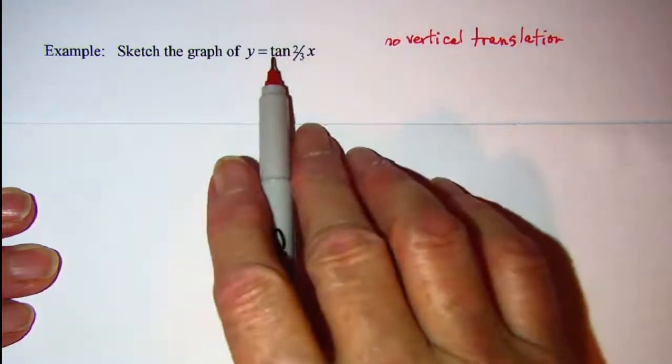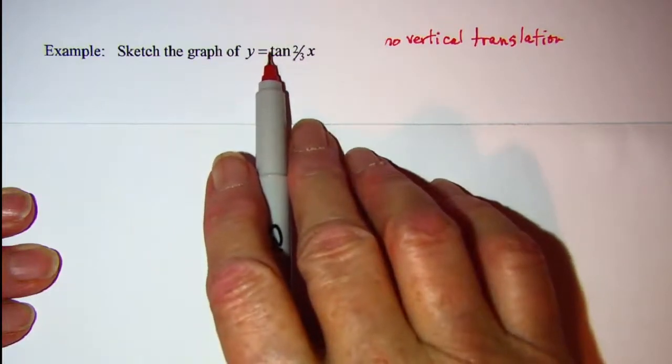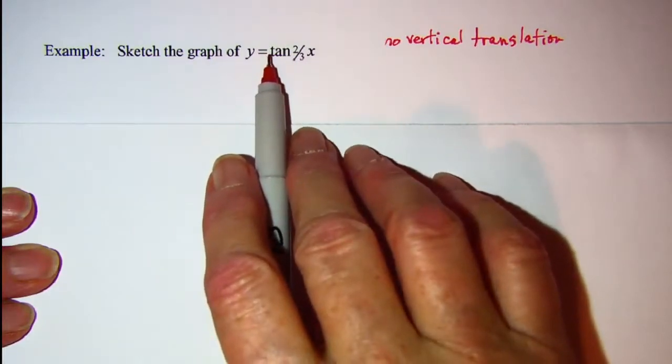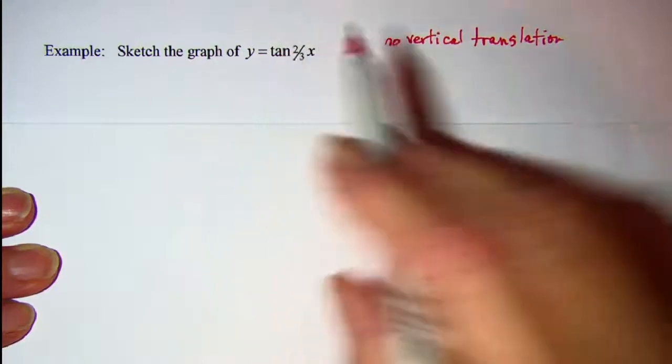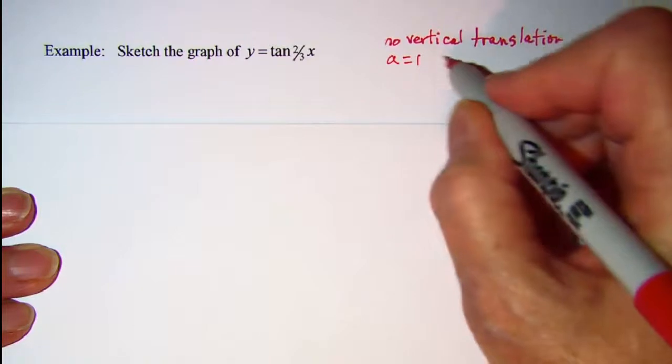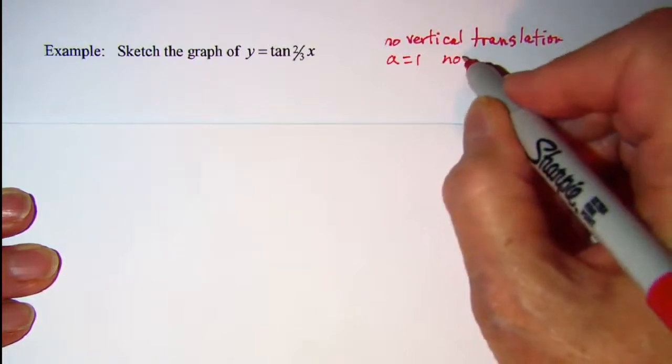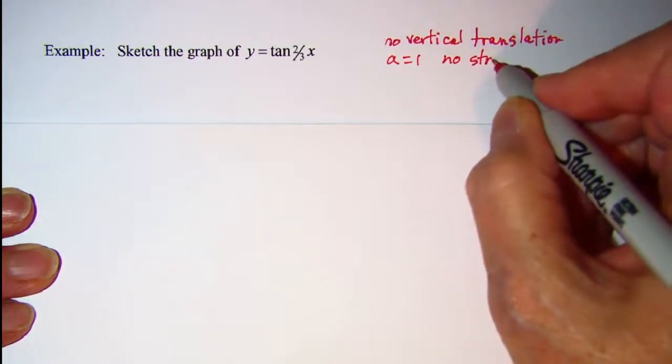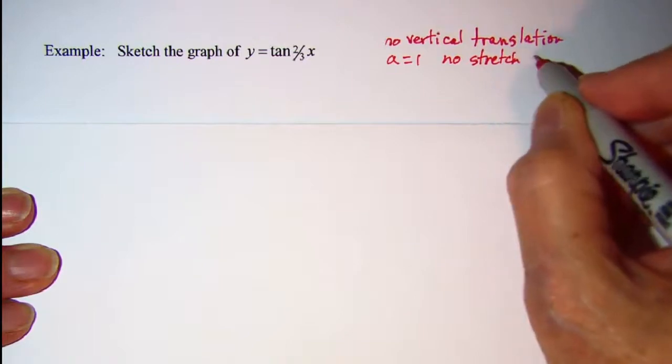Also then the coefficient of tangent, the number out in front here, is just 1, so we have A equals 1, so there is no stretch or shrink.